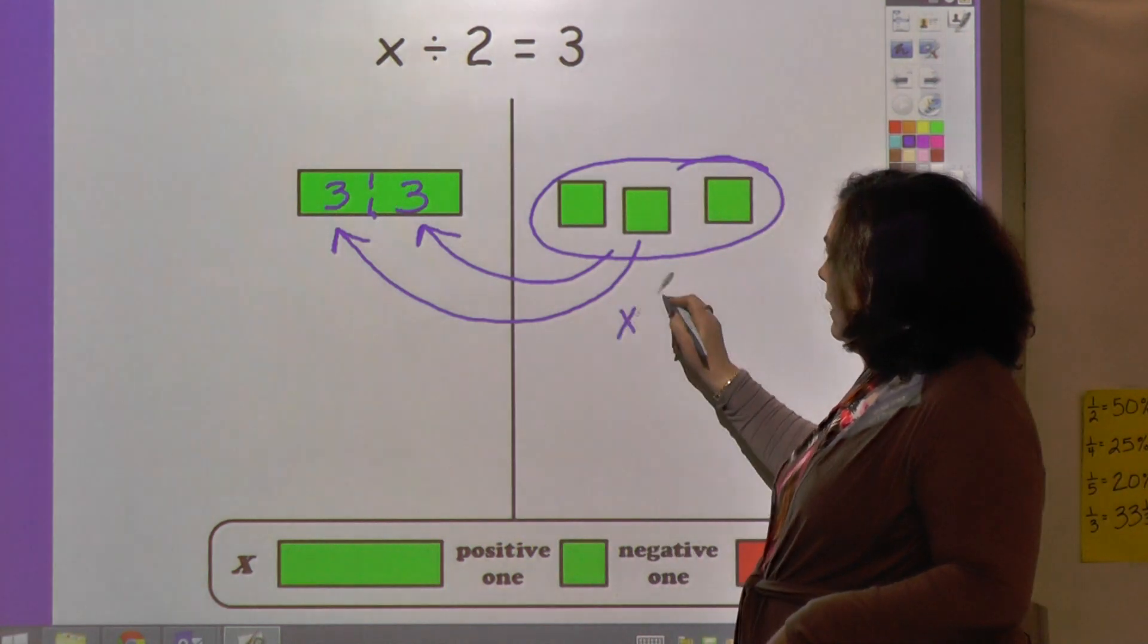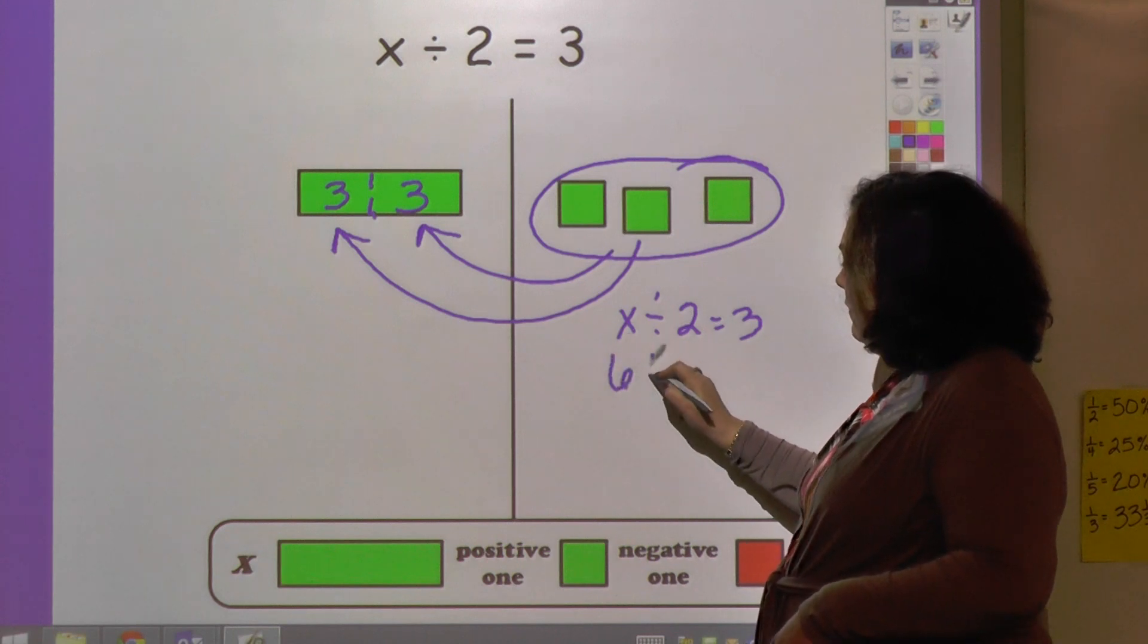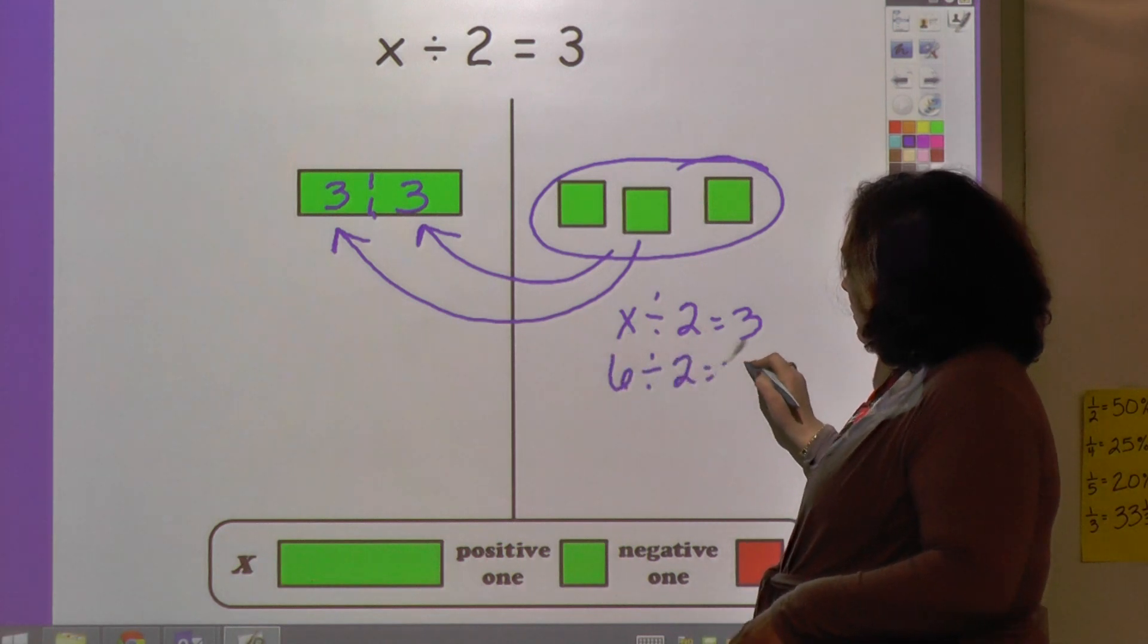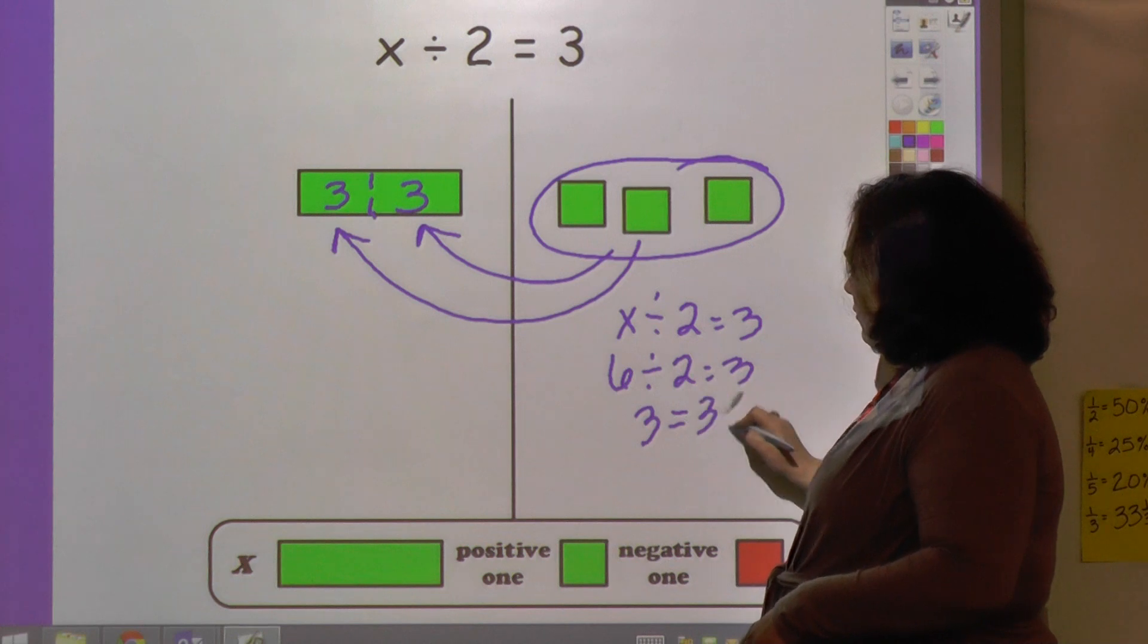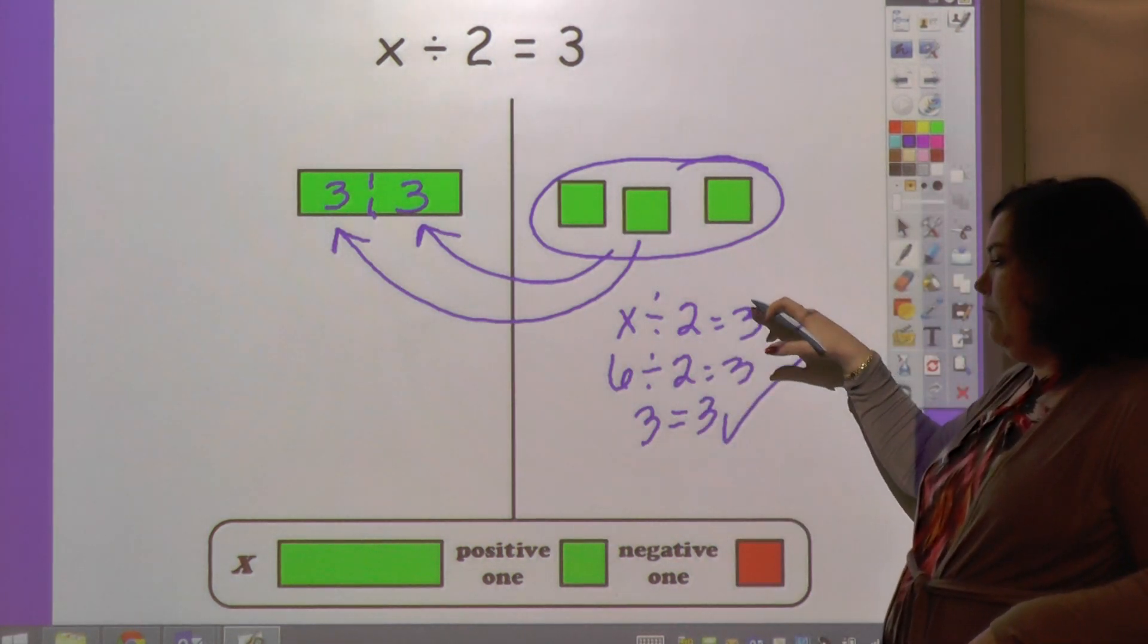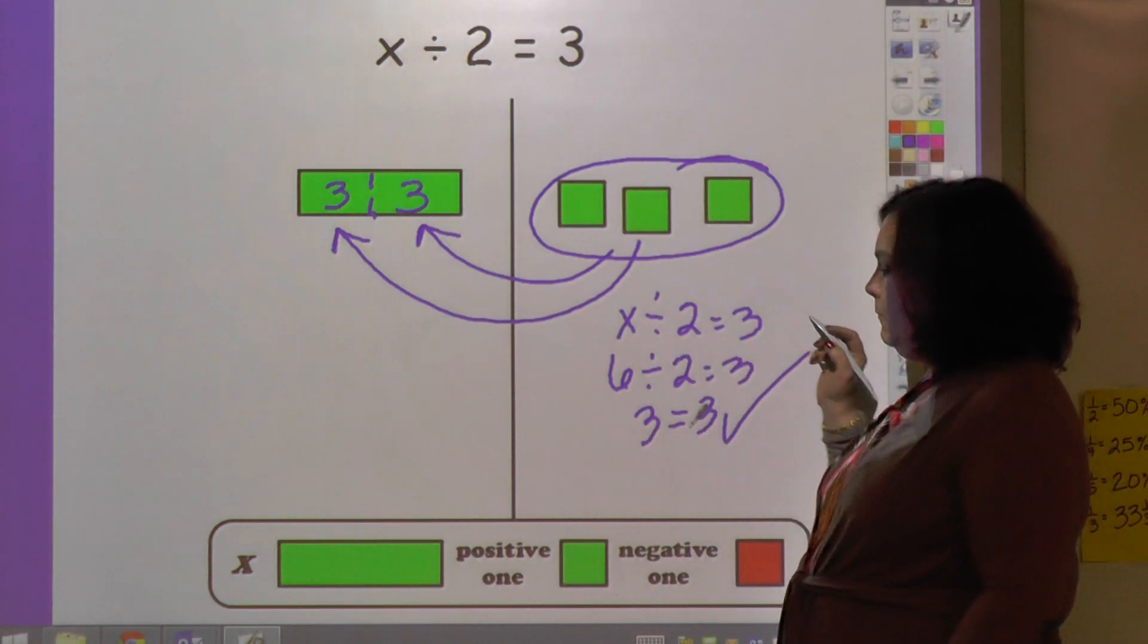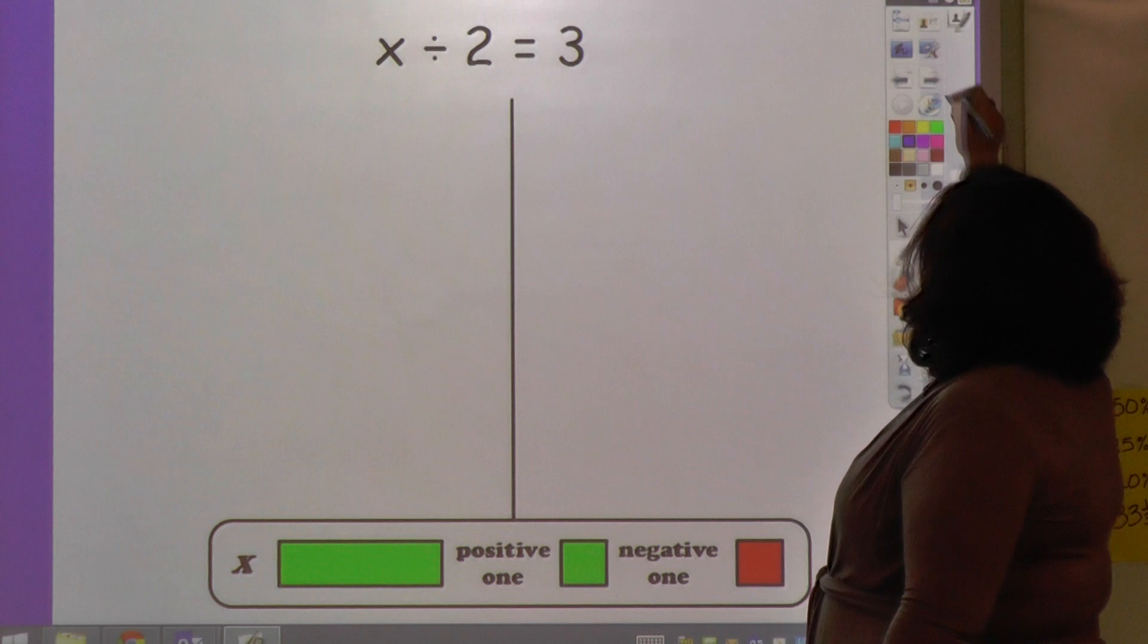So let's put it back in. x divided by 2 equals 3. 6 divided by 2 equals 3. 3 equals 3. Check. And there should always be three lines in your check: the equation, the substitution, and then the answer.